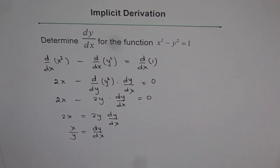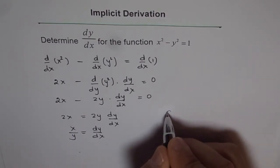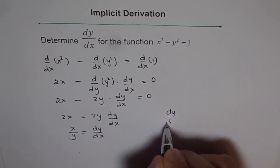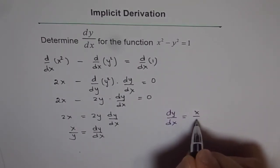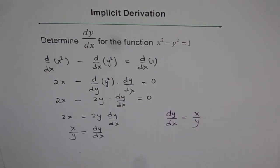And that's how we can get our answer using implicit derivation method. So we get dy/dx for the given function is equal to x/y at any point on the curve.